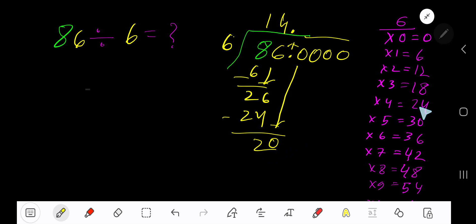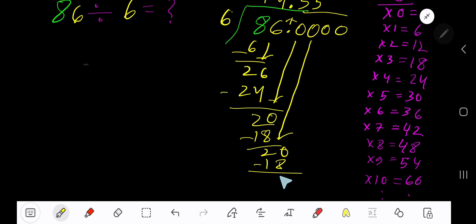4 times is 24, 6 times 4 is 24 which is greater, so three times. 3 times 6 is 18. Subtract to get 2. Bring down another zero. 6 goes into 20 three times. 3 times 6 is 18. Subtract, and again you are getting 2.